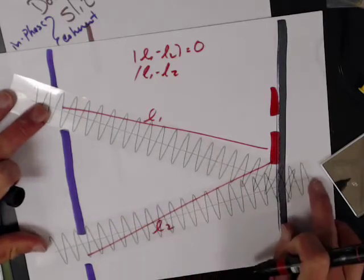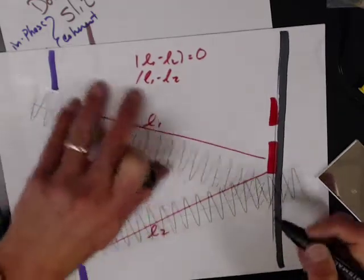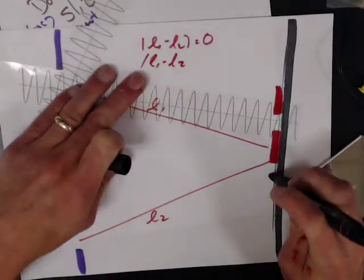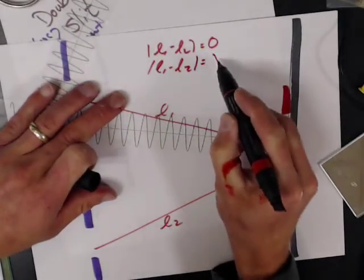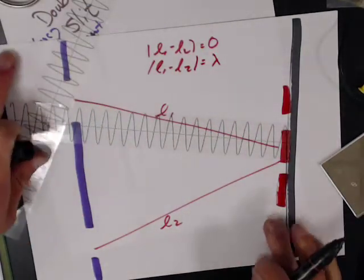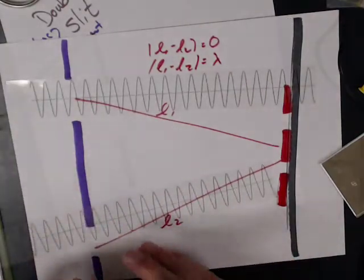Over here, crest, that one crest on that one. Here, L1 and L2 is now one wavelength difference. It's absolute value, so that's why that one works really well too.